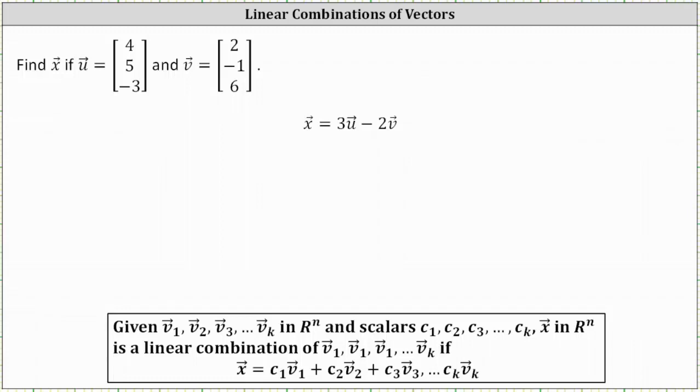We're asked to find vector x given vector u and vector v, where vector x is equal to three times vector u minus two times vector v, which means vector x is a linear combination of vectors u and v in R3, where these scalars are three and negative two.